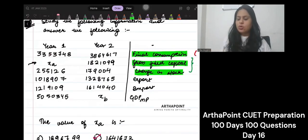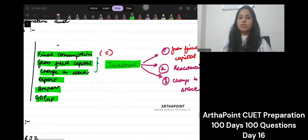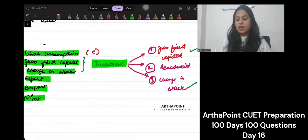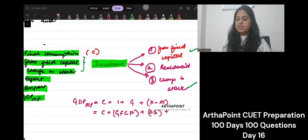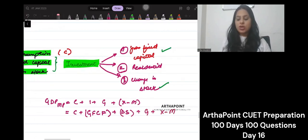Then they have given export, import and GDPMP. Tell me, what is the formula of GDPMP? It is GDPMP equals C plus I plus G plus NX. Investment ko I will break. So I will write this as C plus gross fixed capital formation plus change in stock plus G plus X minus M.